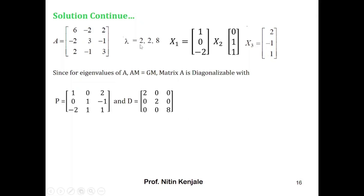The modal matrix P and diagonal matrix D are constructed as follows: eigenvalues 2, 2, and 8 go along the diagonal of D, and the eigenvectors x1=(1,0,−2), x2=(0,1,1), x3=(2,−1,1) form the three columns of P. This is how one checks diagonalizability and finds the corresponding invertible matrix P and diagonal form D.